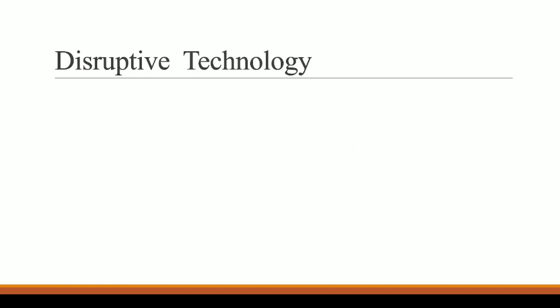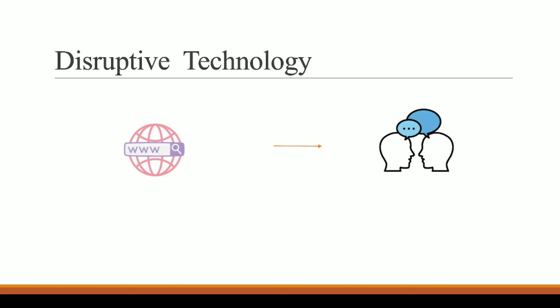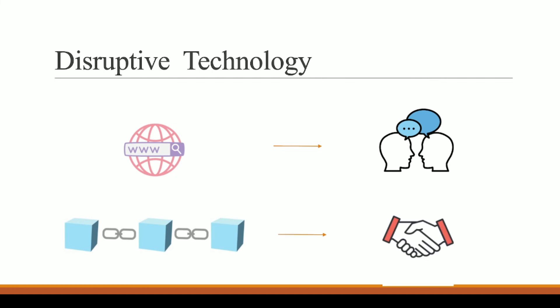Blockchain is a disruptive technology, just like the internet. The internet made our communication part very easy — one of the most important human needs. Blockchain is bringing trust to this communication. Now we are not just communicating; we are communicating while trusting someone. As you can see in these two pictures, blockchain is acting like the internet in the sense that just as the internet brought a revolution to communication, blockchain is bringing a revolution to trust.